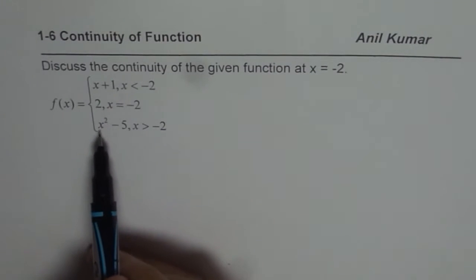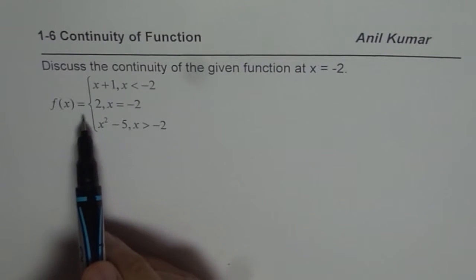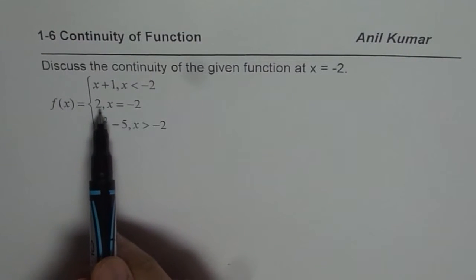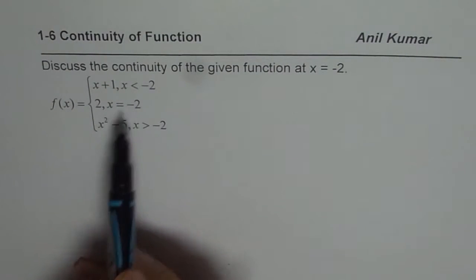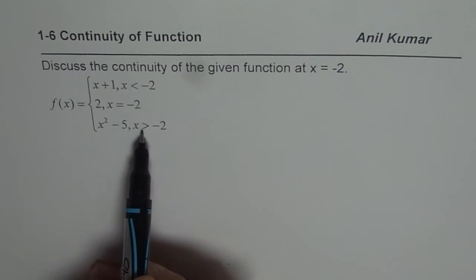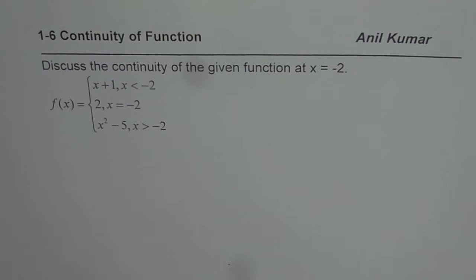We have a piecewise function, f of x equals to x plus 1 when x is less than minus 2, equals to 2 when x equals to minus 2, and x square minus 5 when x is greater than minus 2. So we have three pieces.